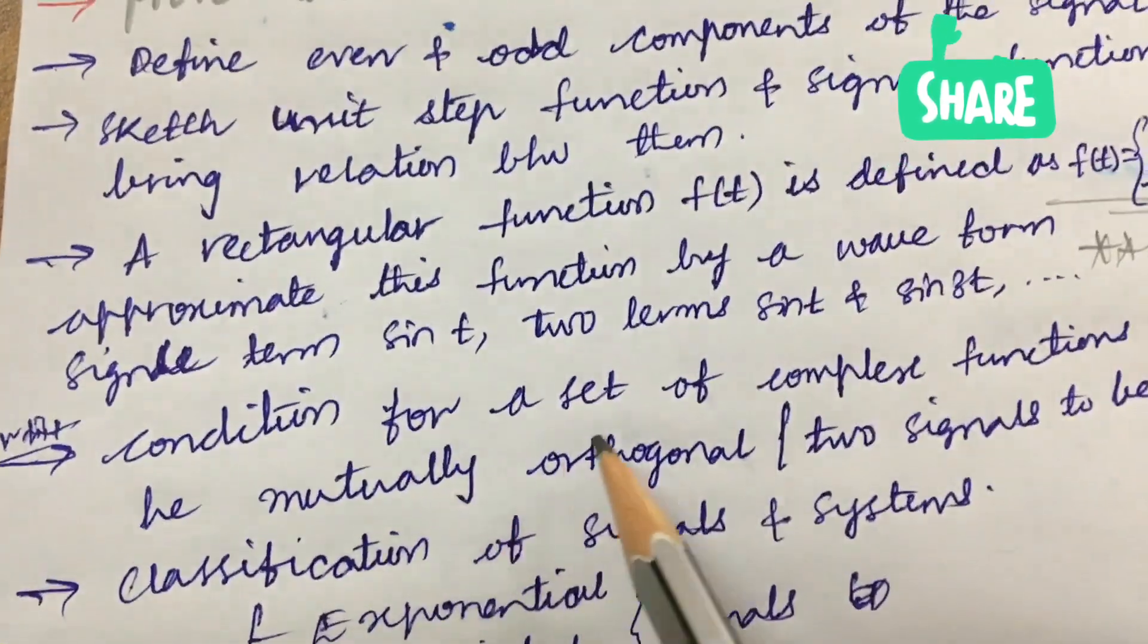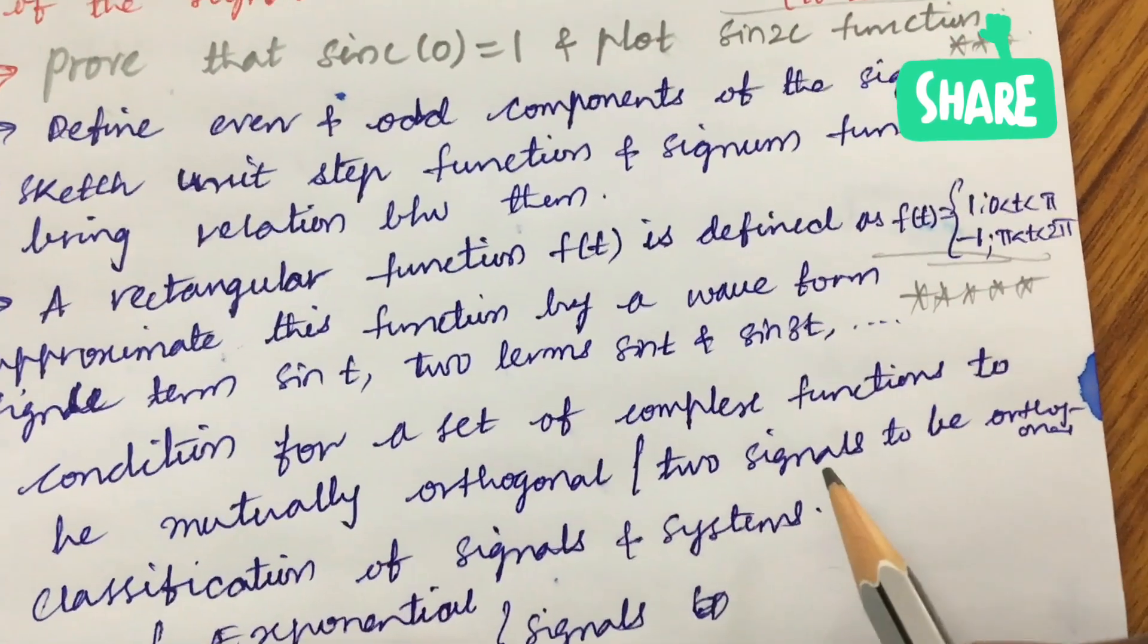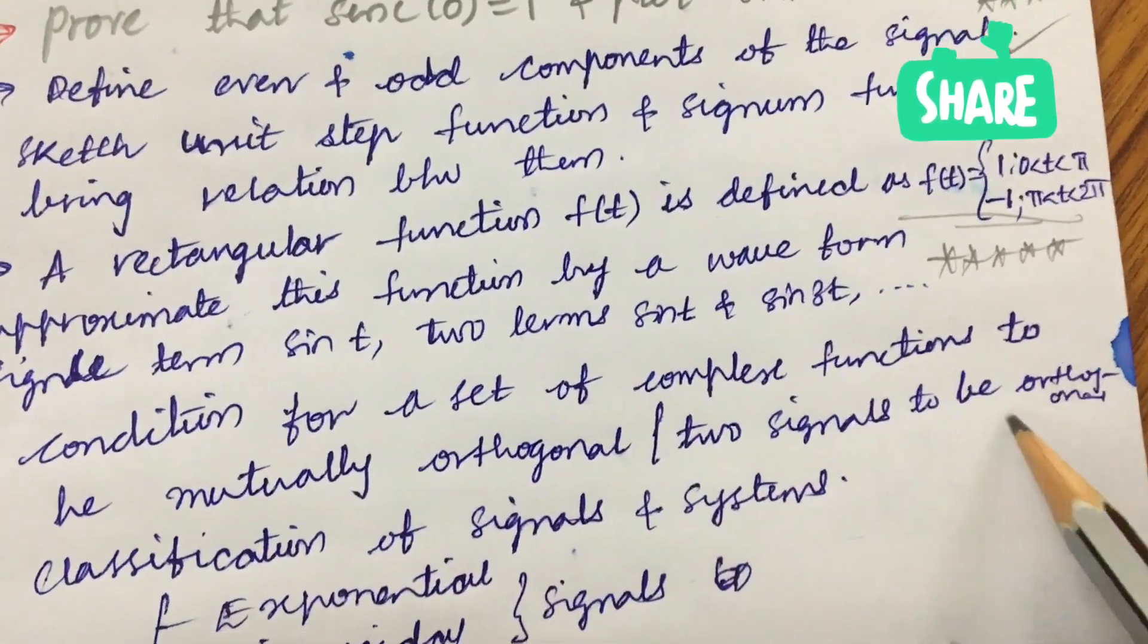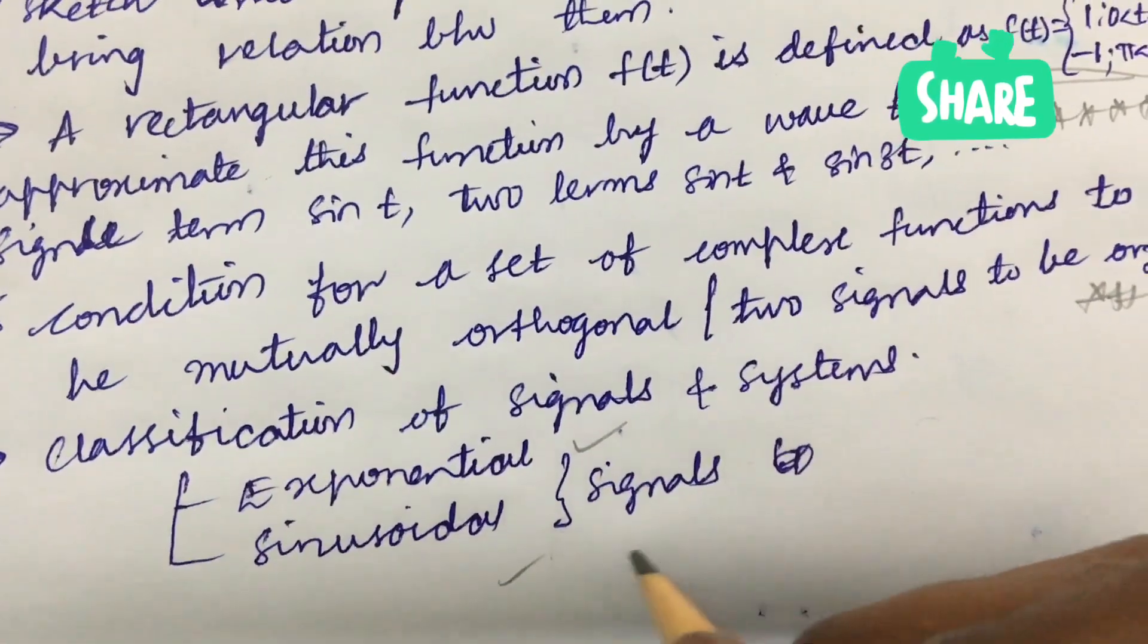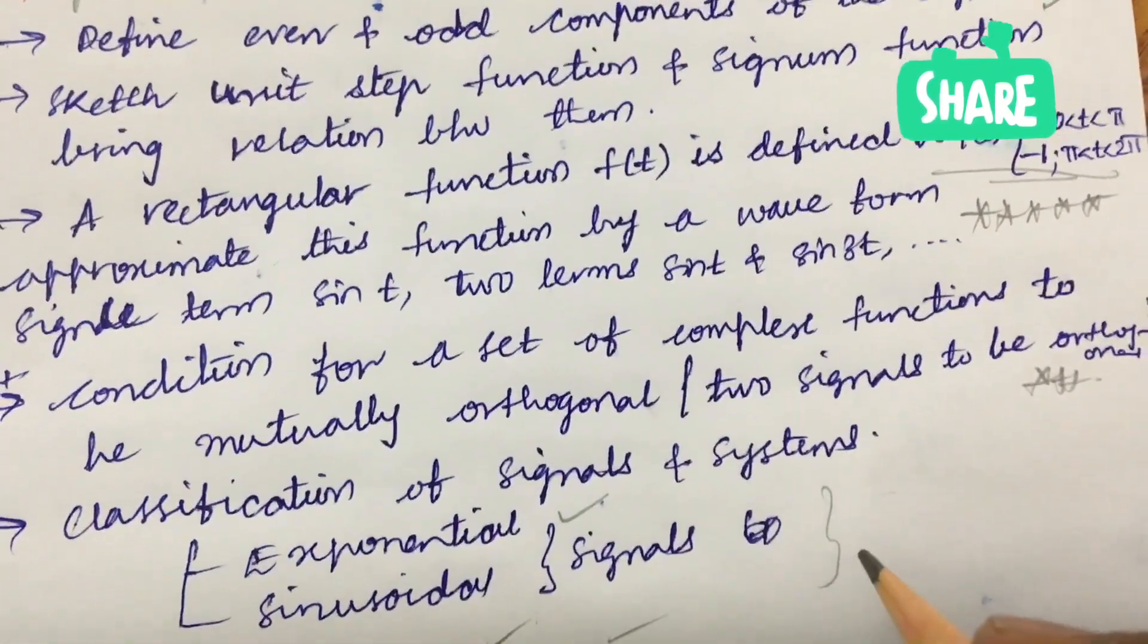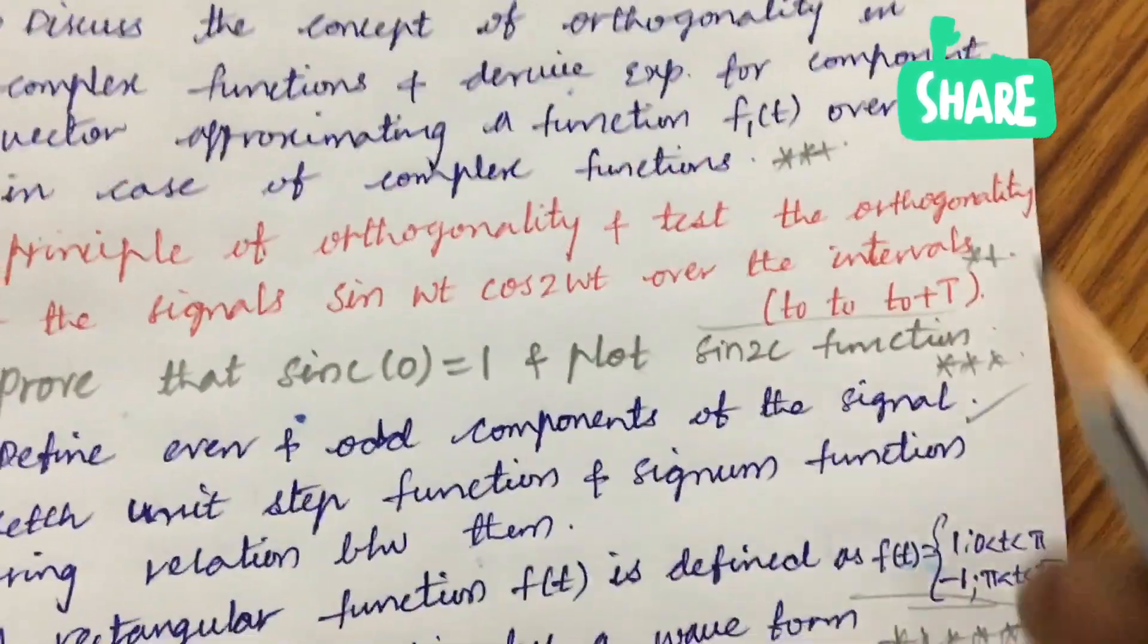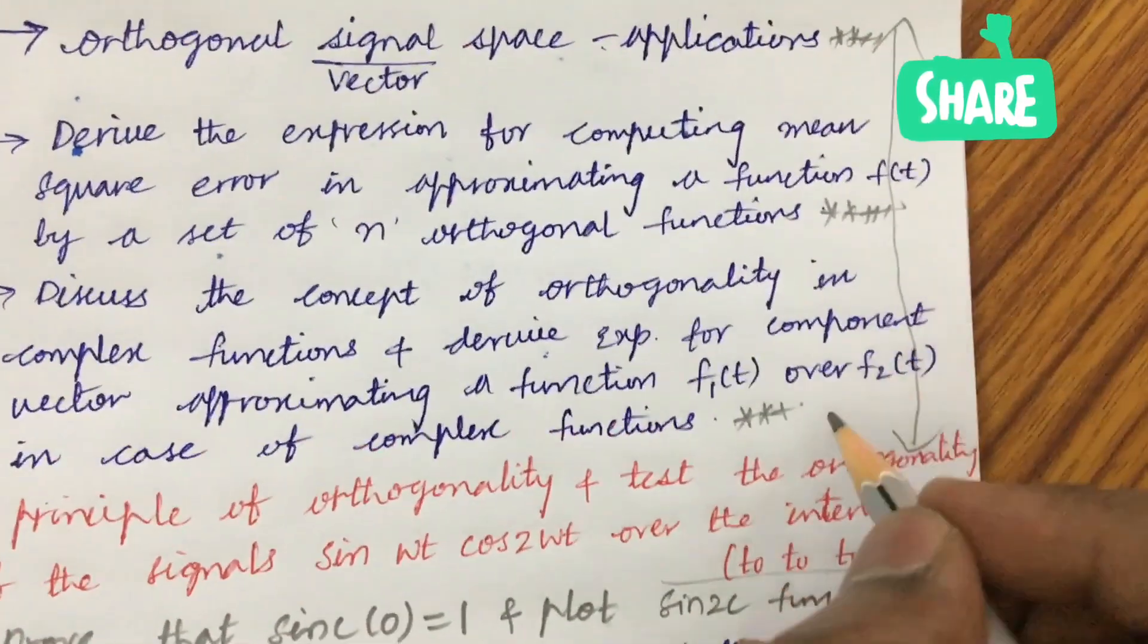Later what is a condition for a set of complex functions to be mutually orthogonal or two signals to be orthogonal may be also one of the 7 mark question. And related to the exponential as well as sinusoidal signals and the classification base you are going to get certain relations and the problems.